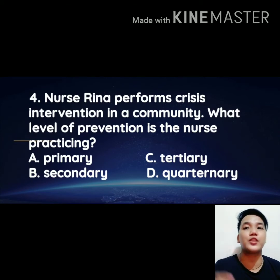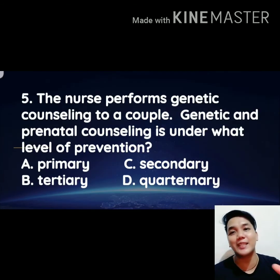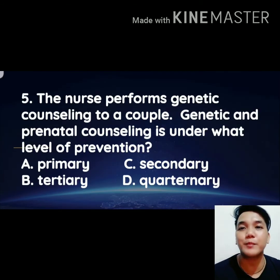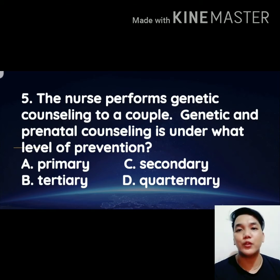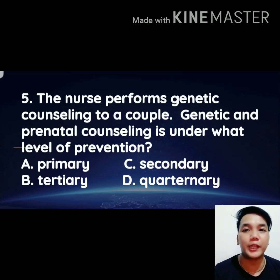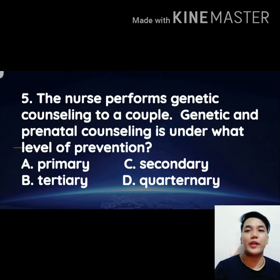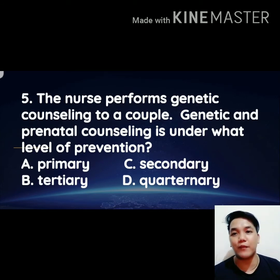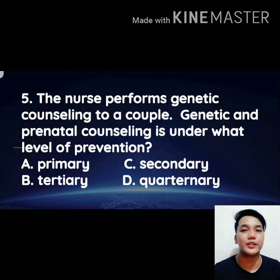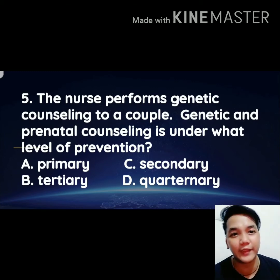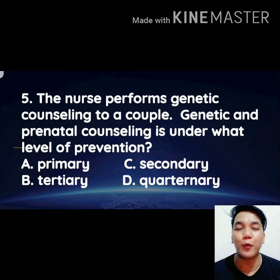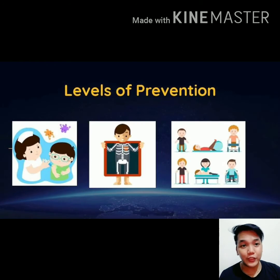Number five: the nurse performs genetic counseling to a couple. Genetic and prenatal counseling is under what level of prevention? A) primary level of prevention, B) tertiary level of prevention, C) secondary level of prevention, or D) quaternary level of prevention. We have three levels of prevention — there is no quaternary level.